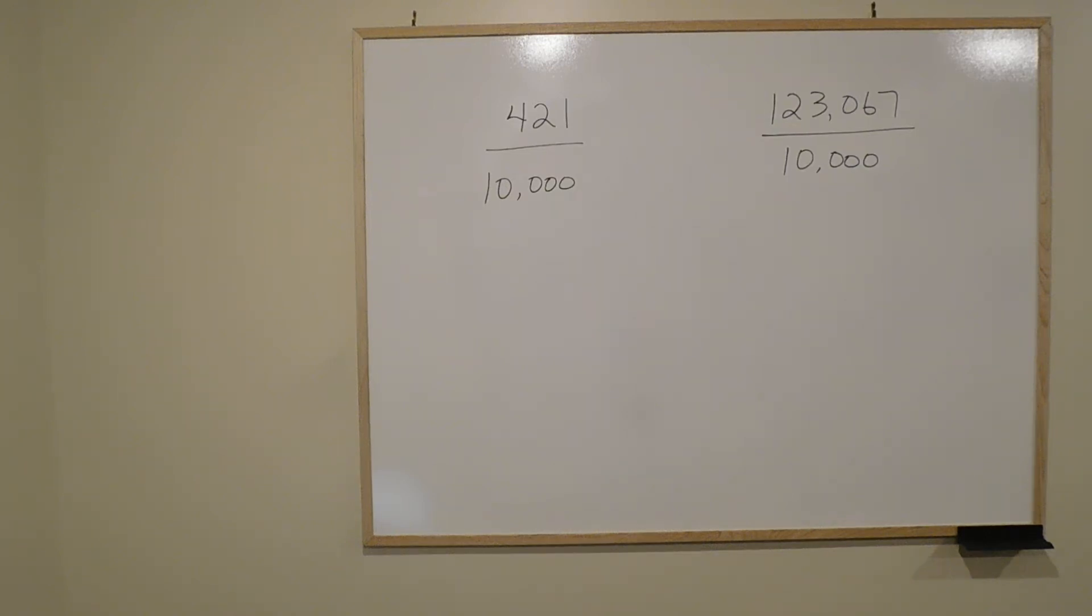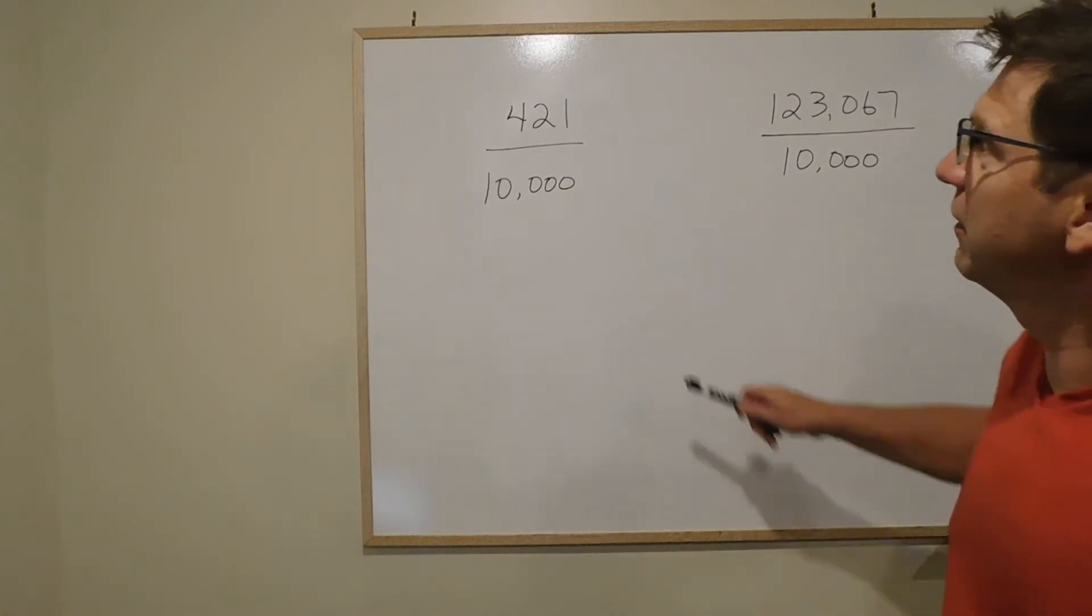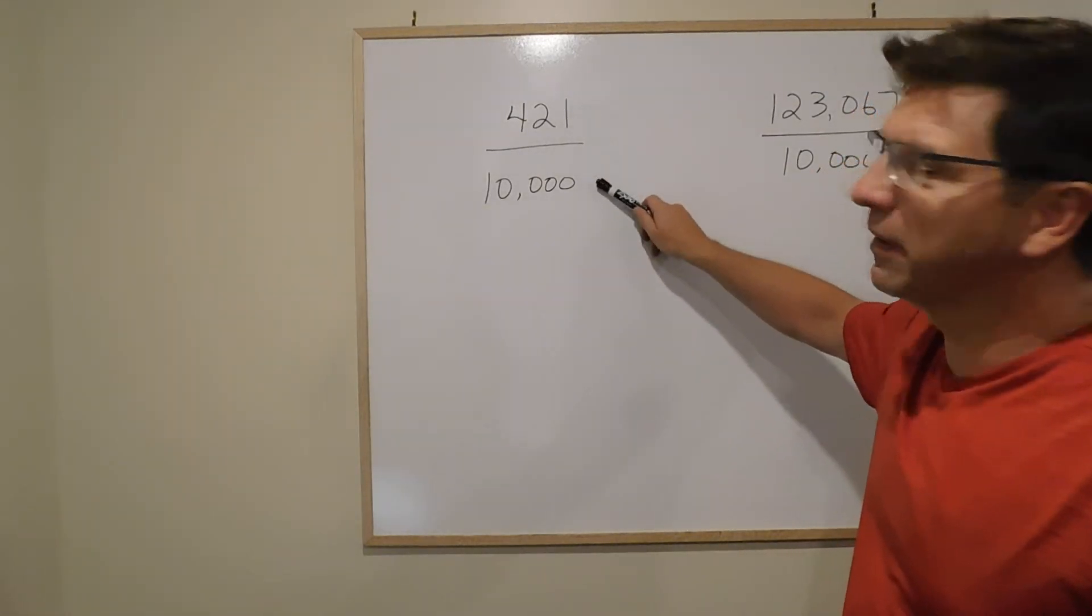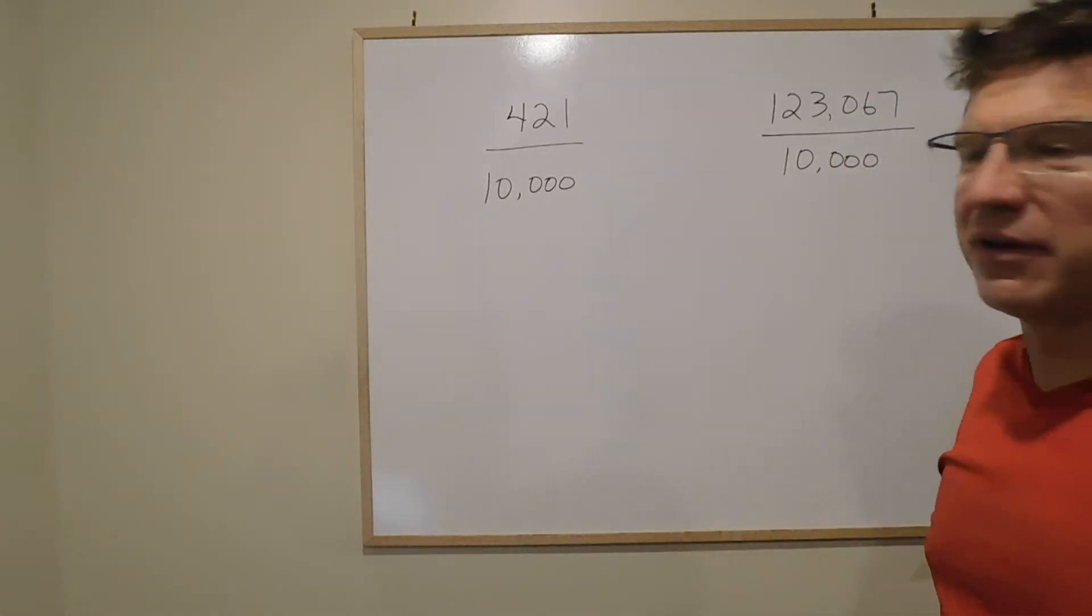Converting fractions to decimals is really just a quick calculation on your calculator. I mean, we all have our calculators. You're going to do 421 divided by 10,000 and you're going to get yourself a decimal place.